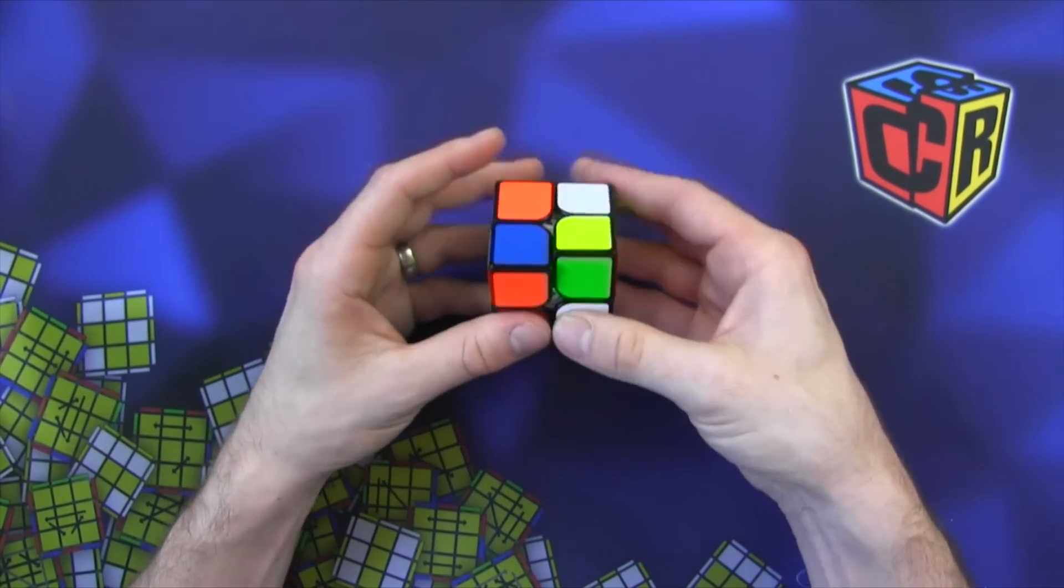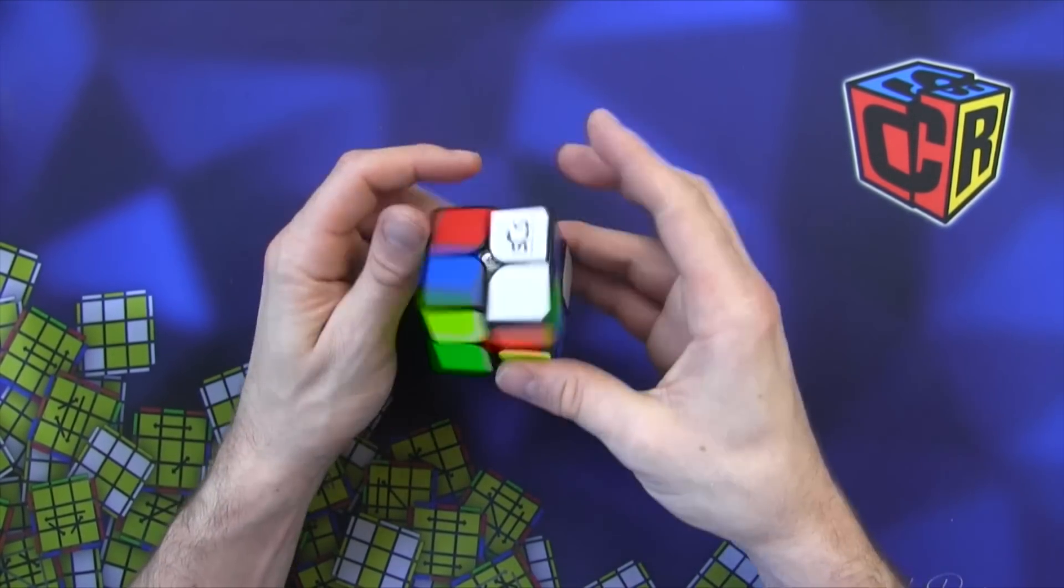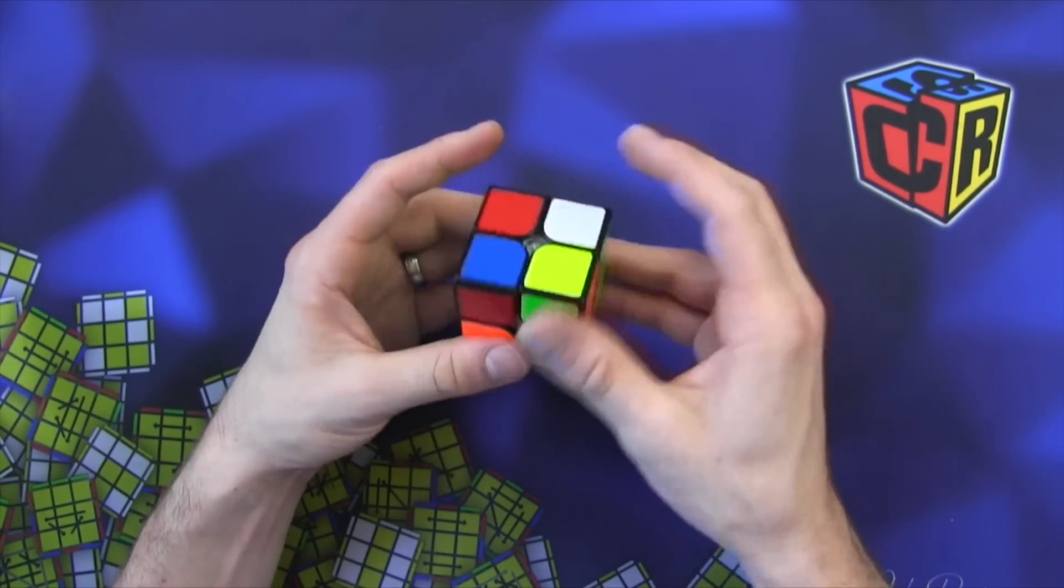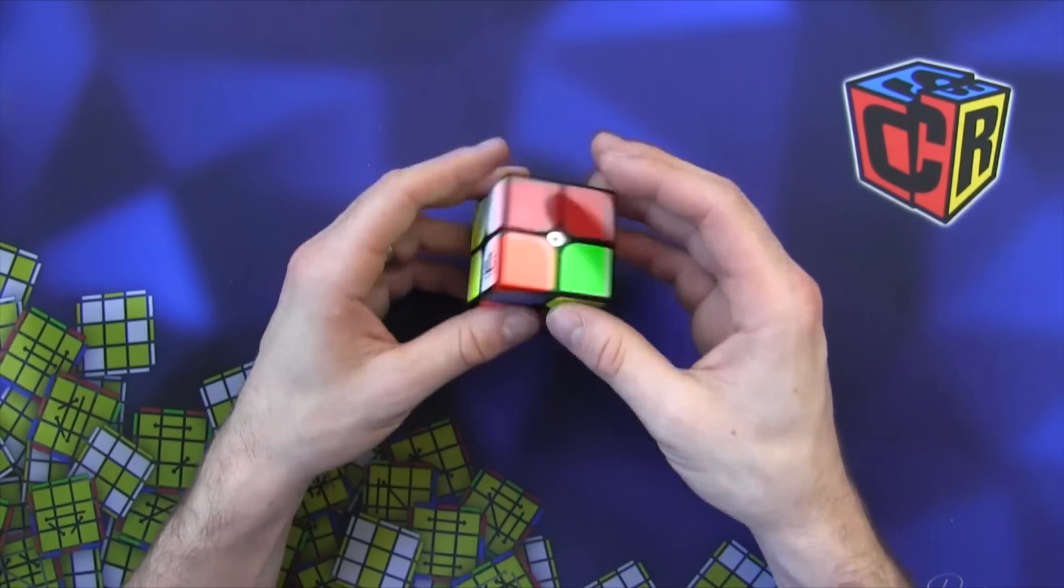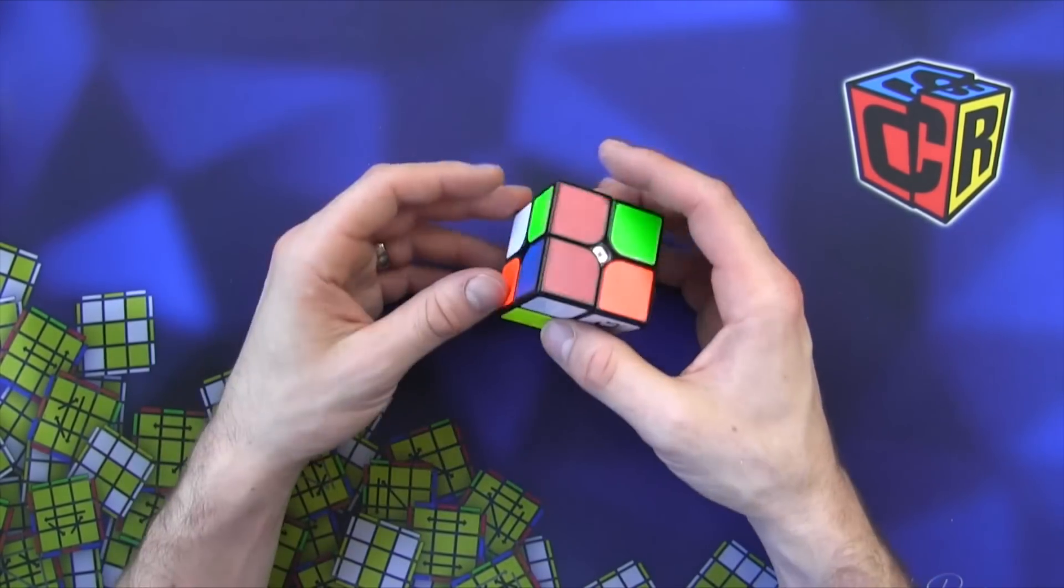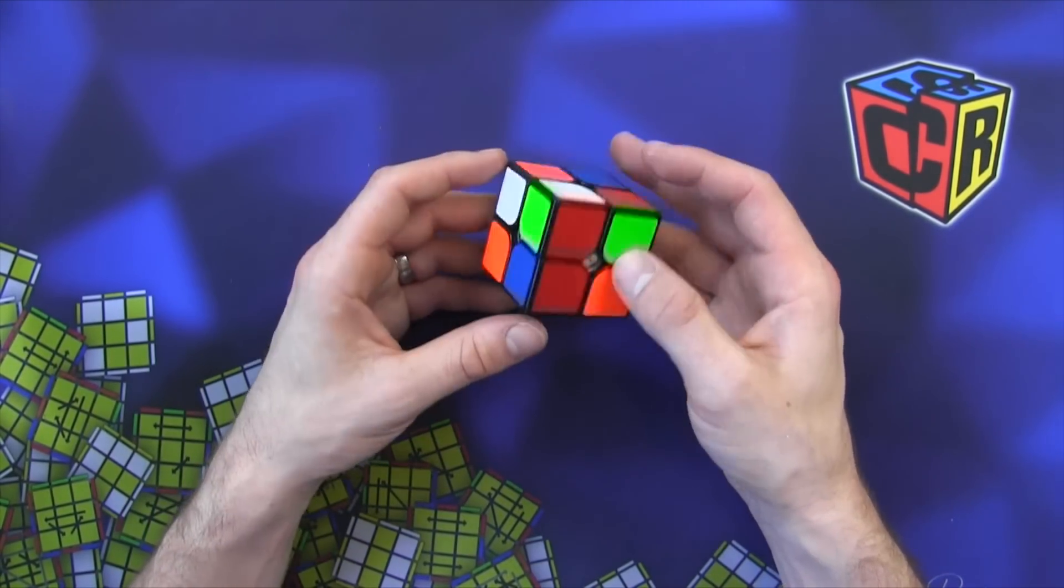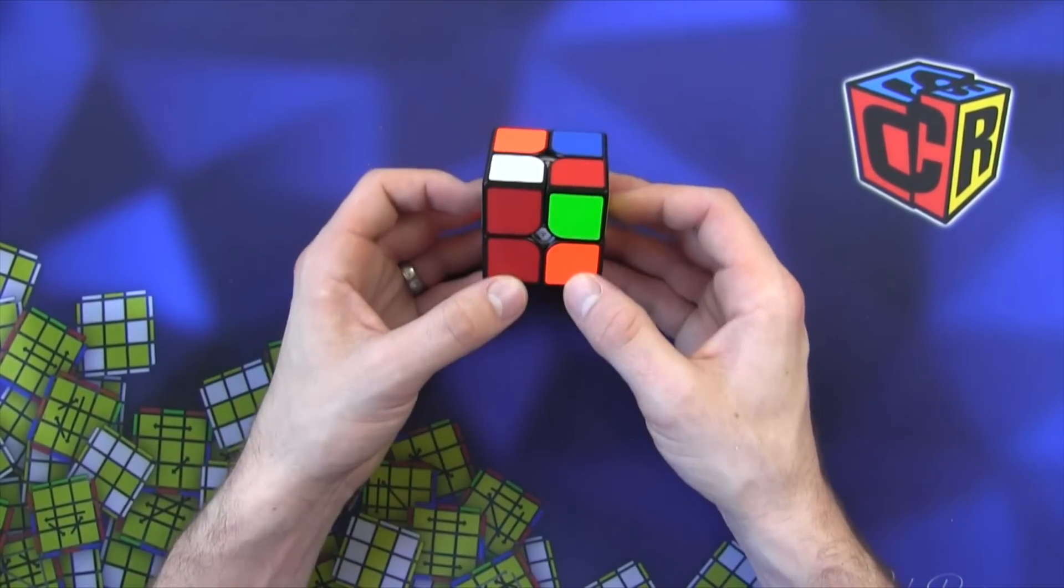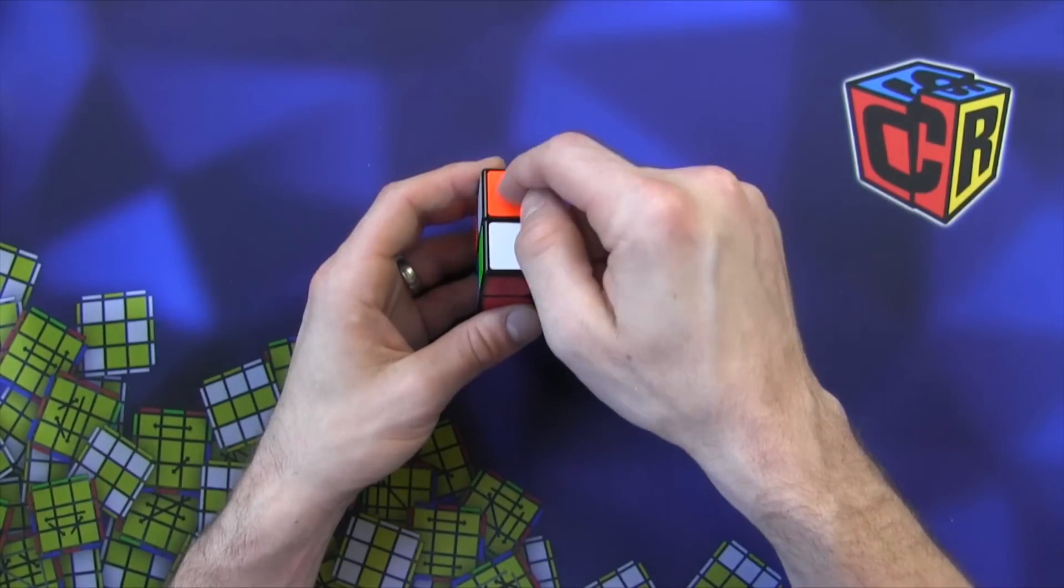So I'll show you what I mean by that. I'm just going to mix this up. Now what's nice with the 2x2 is you can start from any spot. There's no center so you could look and see if anything is already in place and just sort of put that in front. But right here I'm going to start and hold it this way. This is my bank piece.